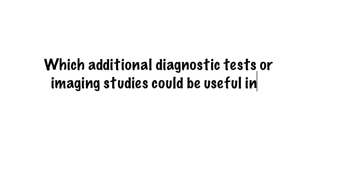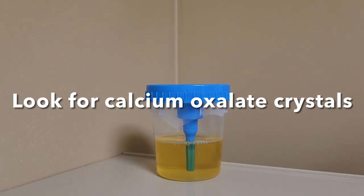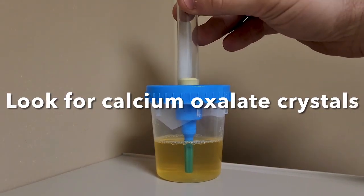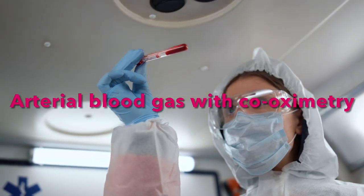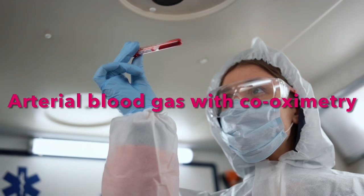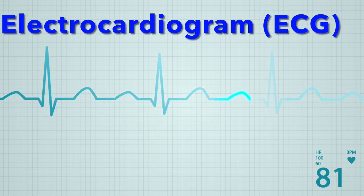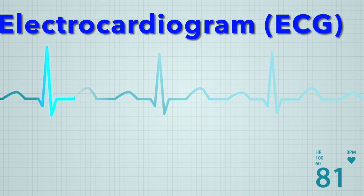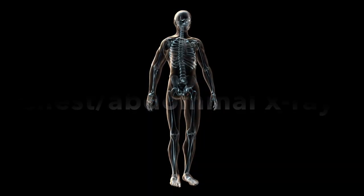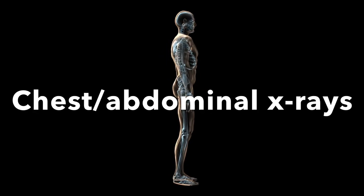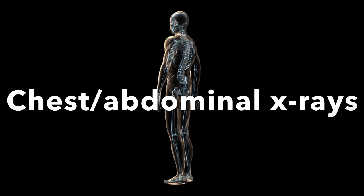Additional diagnostic tests include urinalysis — look for calcium oxalate crystals, which are suggestive of ethylene glycol poisoning. Arterial blood gas with co-oximetry should be obtained to assess acid-base status and detect any abnormal hemoglobins such as carboxyhemoglobin or methemoglobinemia. An electrocardiogram should be performed to evaluate for cardiac conduction abnormalities such as QRS widening or QT prolongation, which can occur with certain toxic ingestions. Chest and abdominal x-rays could also be useful if there is concern about ingestion of radiopaque substances such as iron or lead.